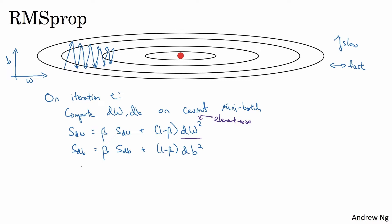Next, RMSprop then updates the parameters as follows. W gets updated as w minus the learning rate. And whereas previously we had alpha times dW, now it's dW divided by square root of sdW. And b gets updated as b minus the learning rate times, instead of just the gradient, this is also divided by, now divided by sdB.